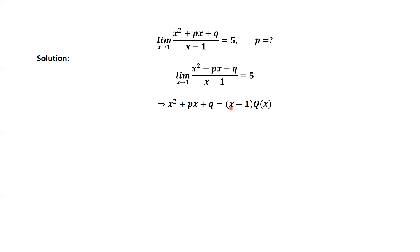If x equals 1 is not a root of the numerator, this means when x goes to 1, the numerator goes to a constant, not 0, and the denominator goes to 0. The limit will be infinity, cannot be 5. This means x minus 1 is the factor of the numerator.